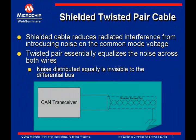Twisted pair wiring is a common method to reduce the effects of radiated emissions from external sources. Shielded twisted pair reduces the chance of noise coupling on the bus lines. Noise that does couple on the line is equally distributed to both wires and is effectively invisible to the differential signaling. The twisted pair solution is basically a filter and does not provide any protection from high energy electrical disturbances.